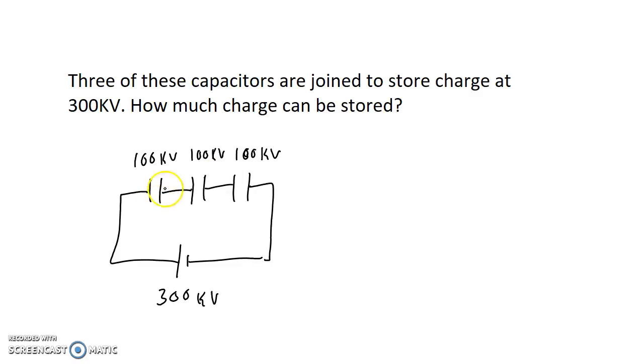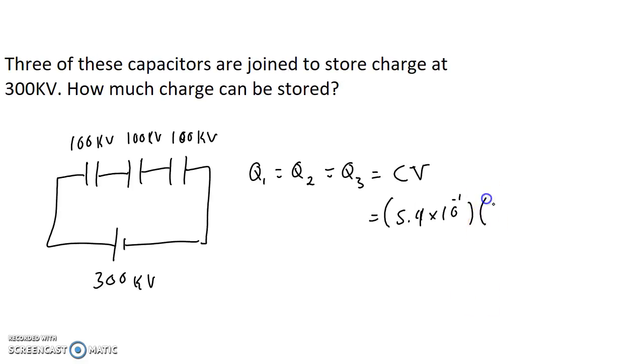The next thing is that because all three capacitors have the same capacitance and all three capacitors are exposed to the same voltage, all three capacitors are going to be charged to the same total charge. And that charge is going to be their capacitance times the voltage to which they're charged. We know their capacitance, that was 5.4 times 10 to the negative 1 farads. And we know the voltage that we're charging them to, 100 kilovolts.